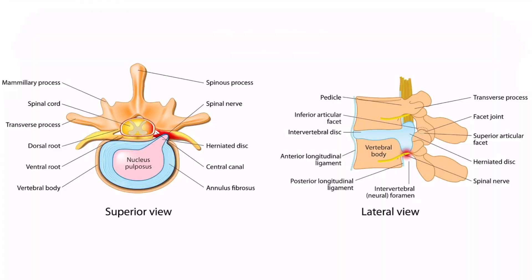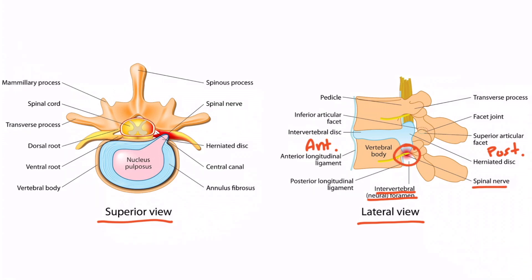In order to understand this better, let's look at some of the anatomy. This overview image shows anatomy associated with radiculopathy. The left part of the image is a superior view, and the right part is a lateral view. Let's focus on the right part first. Notice that this is anterior and this is posterior. You can see the neural foramen right here, which is where the nerve exits the vertebral column. Notice that the herniated disc is protruding posteriorly, which compresses the spinal nerve root — you can see the spinal nerve getting compressed by this herniated intervertebral disc.